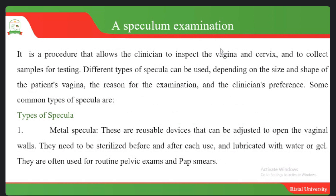The speculum examination is a procedure that allows the clinician to inspect the vagina and cervix and to collect samples for testing. Different types of speculums can be used depending on the size and shape of the patient's vagina and the clinician's preference. Common types include metal speculums — such as the Cusco or ovoid types. Speculums have different shapes and are made of different materials — some are metal, others are plastic.